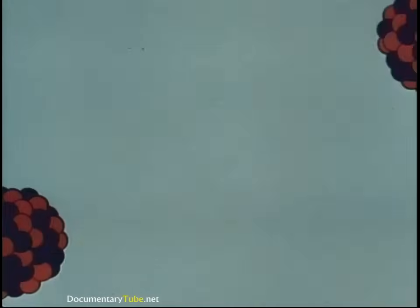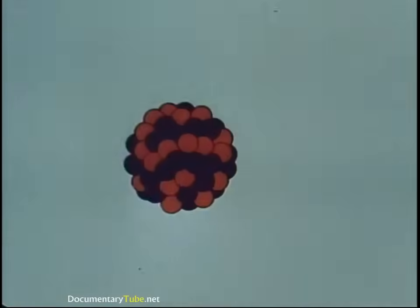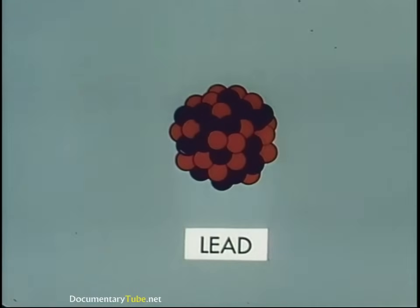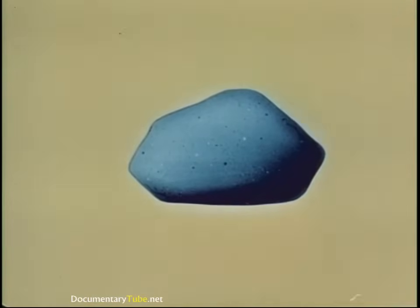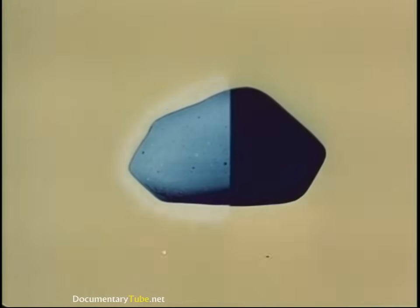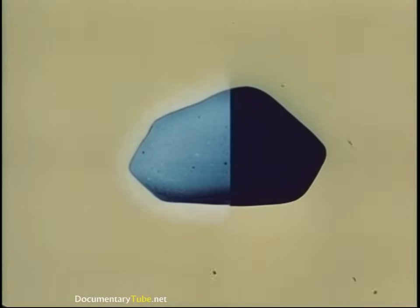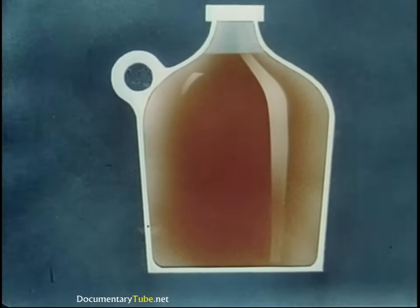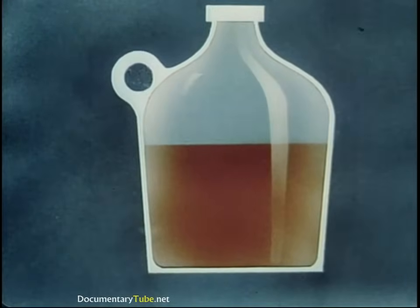Natural radioactivity causes these heavy, unstable elements to decay progressively down the ladder, eventually reaching a stable form of lead. The unit for measuring the rate of such changes or transmutations is the half-life, the time required for 50% of a radioactive material to decay. To illustrate, suppose you had a gallon of whiskey, and each day you drank half the amount of the bottle. The first day you drank half a gallon, and the whiskey's half-life would be one day.